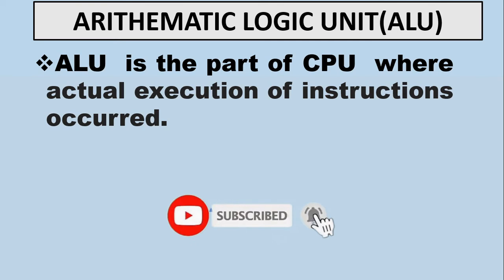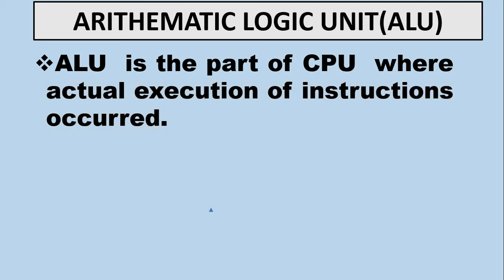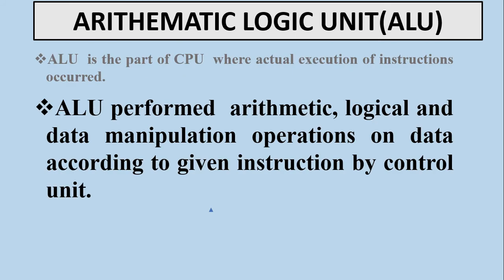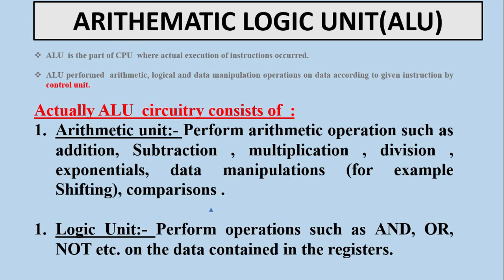The arithmetic logic unit is the part of the central processing unit where actual execution of instructions occurs. ALU performs arithmetic, logical, and data manipulation operations on data according to instructions given by the control unit. ALU circuitry consists of two units: the arithmetic unit and the logic unit.